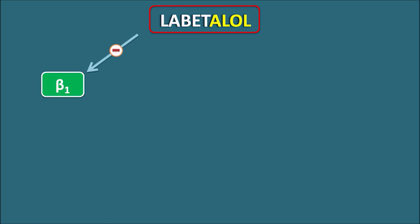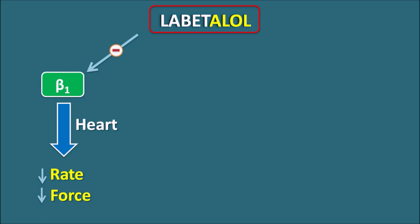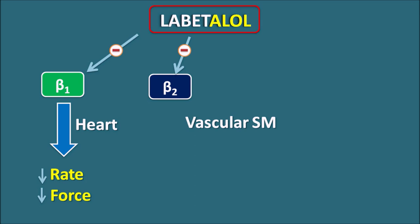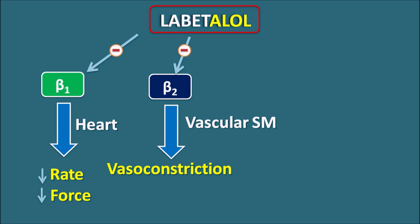Labetalol can block beta-1 receptors, which are mainly present on the heart, thereby decreasing the rate and force of contraction. It can also block beta-2 receptors — since it is non-selective. Beta-2 receptors are present on many smooth muscles, including vascular smooth muscle, where they mainly produce vasodilation. By blocking these beta-2 receptors, Labetalol produces vasoconstriction, inhibiting the vasodilatory response.